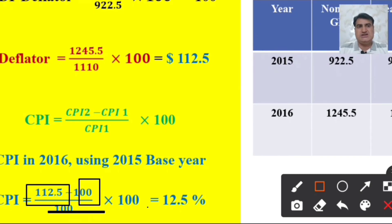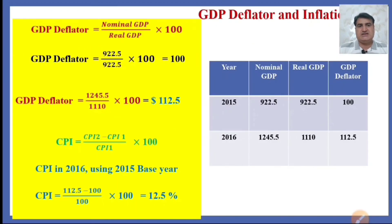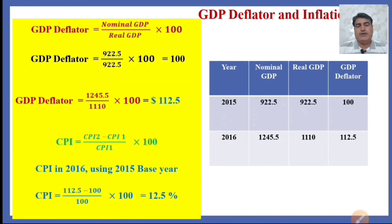This means the 12.5 percent rise in GDP is due to inflation, while the rest of the rise in nominal GDP may be due to an actual increase in output. The GDP deflator helps to segregate how much of the rise in output is due to an increase in price versus how much is a real increase in output. That was all about calculating the inflation rate using the GDP deflator.